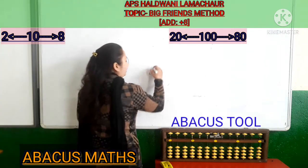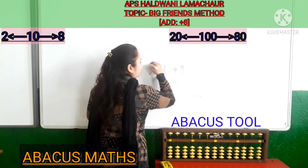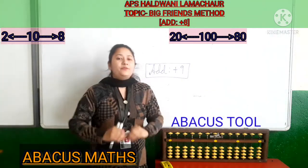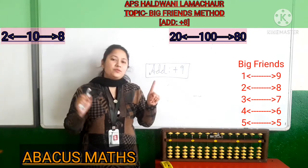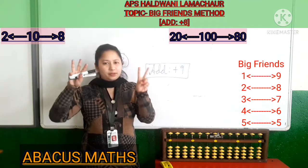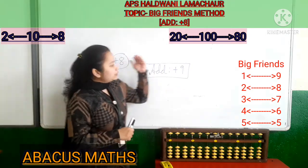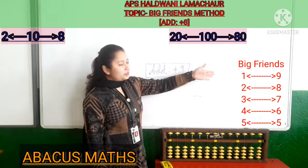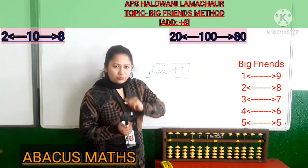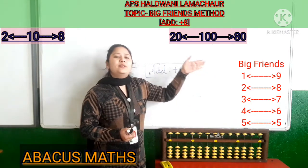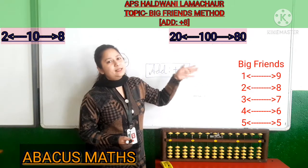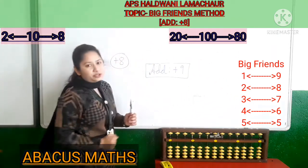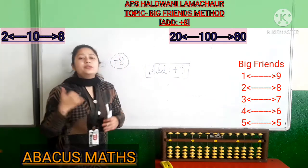In my last video we discussed the topic of plus 9. For this I told you that in big friends the friends change. In small friends, 1 was the friend of 4 and 2 was the friend of 3. But in big friends the friends change: 1 is the friend of 9, 2 is the friend of 8, 3 is the friend of 7, 4 is the friend of 6, and 5 is the friend of 5.